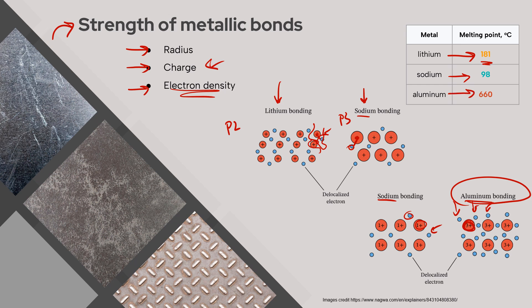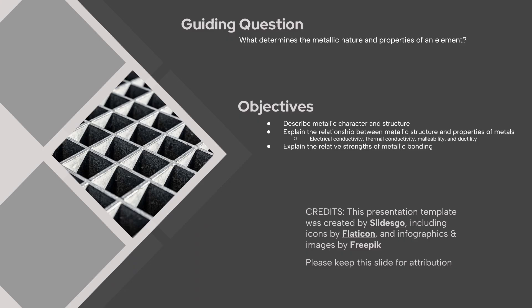Aluminum's melting point is 660 degrees Celsius, significantly higher than sodium's 98 degrees Celsius. In under 10 minutes we have finished our video lecture. Hopefully you're feeling confident about the guiding question: what determines the metallic nature and properties of an element? It's all about that sea of delocalized electrons. We described metallic character and structure, explored the relationship between metallic structure and properties of metals, and discussed the relative strength of metallic bonding. Great work today.